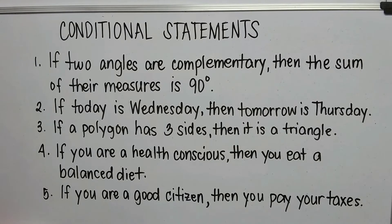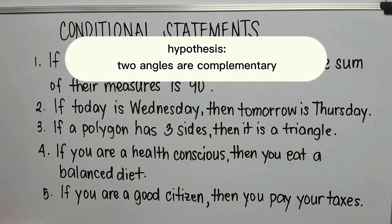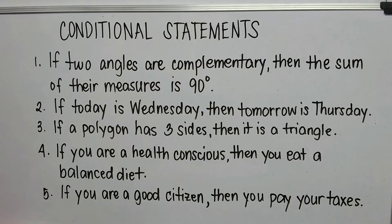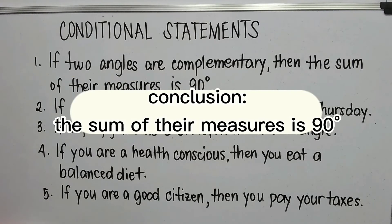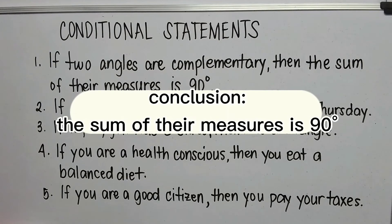Number one: if two angles are complementary, then the sum of their measures is 90 degrees. Our hypothesis is two angles are complementary, and the conclusion is the sum of their measures is 90 degrees.